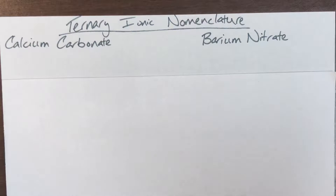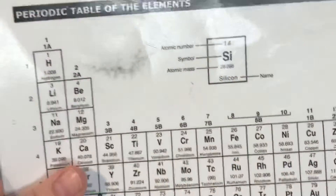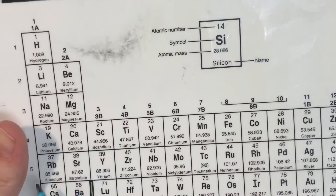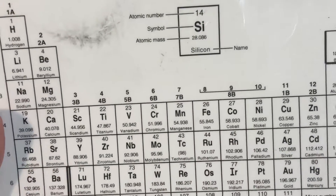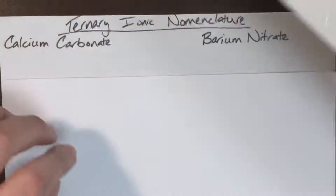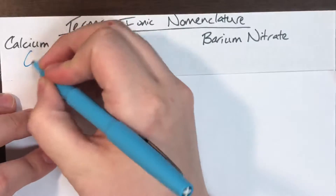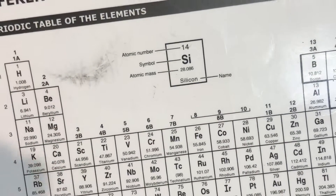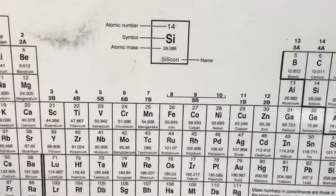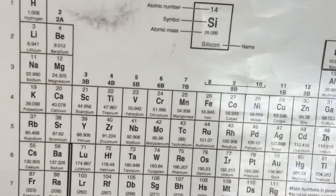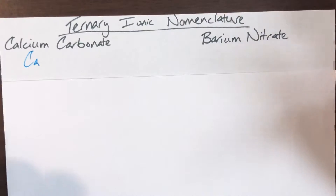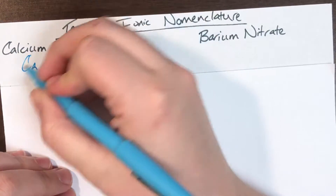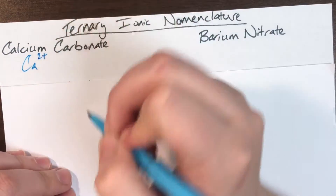The first one is calcium carbonate. Calcium is Ca, and it is in the first two columns, making it a representative metal, so I don't need an oxidative state listed. Since calcium is in column two, it has two valence electrons and will donate those rather than steal six, giving calcium a charge of positive two.